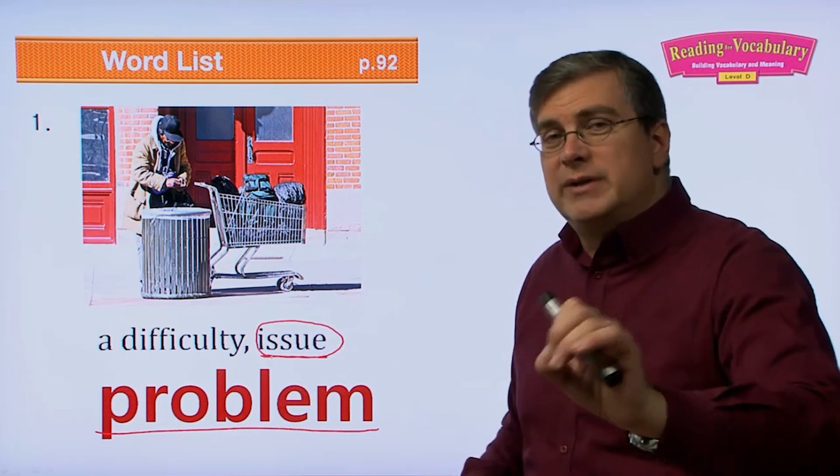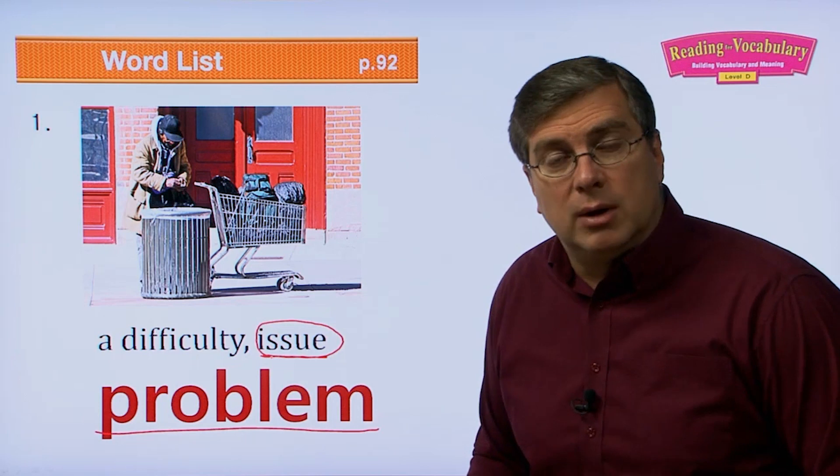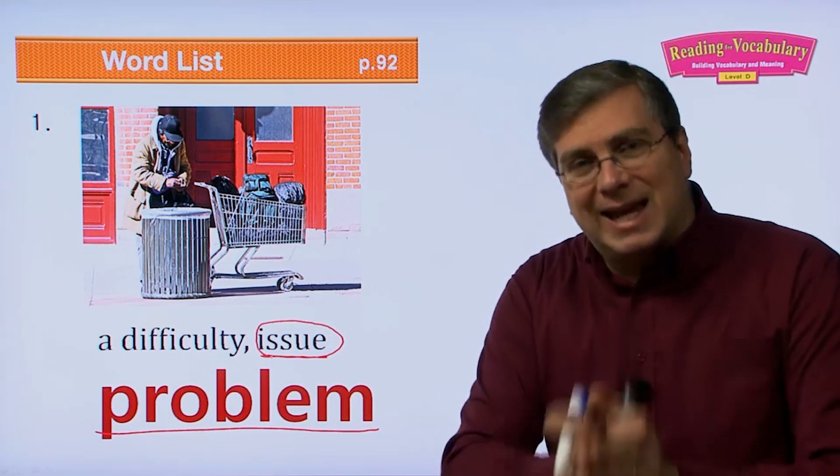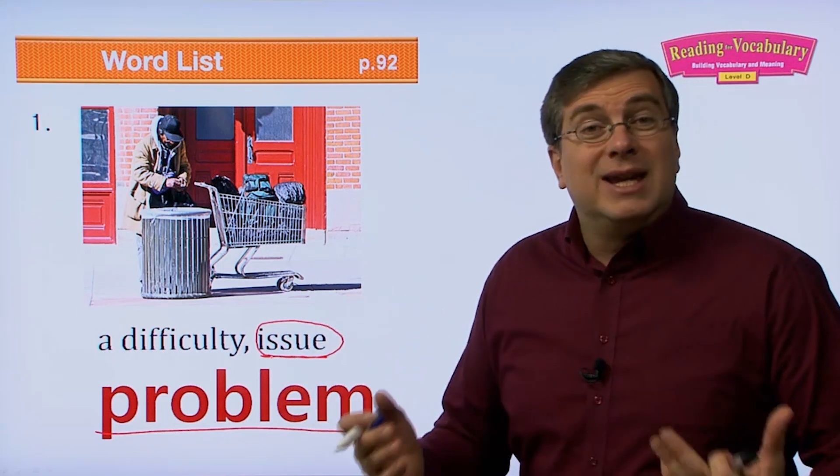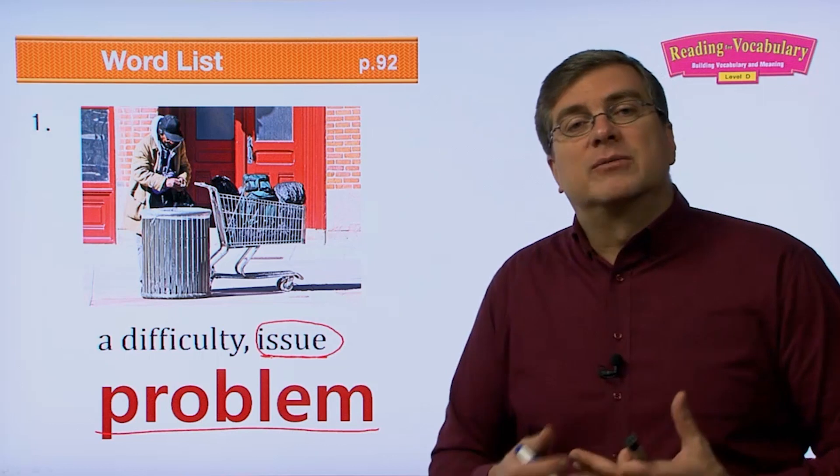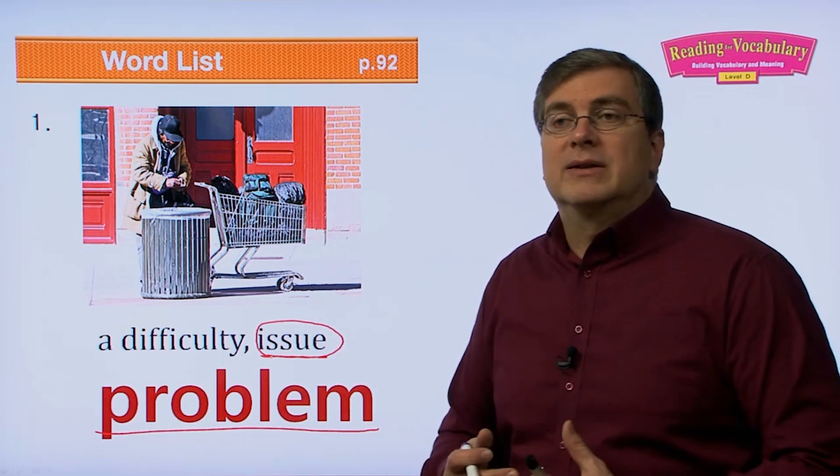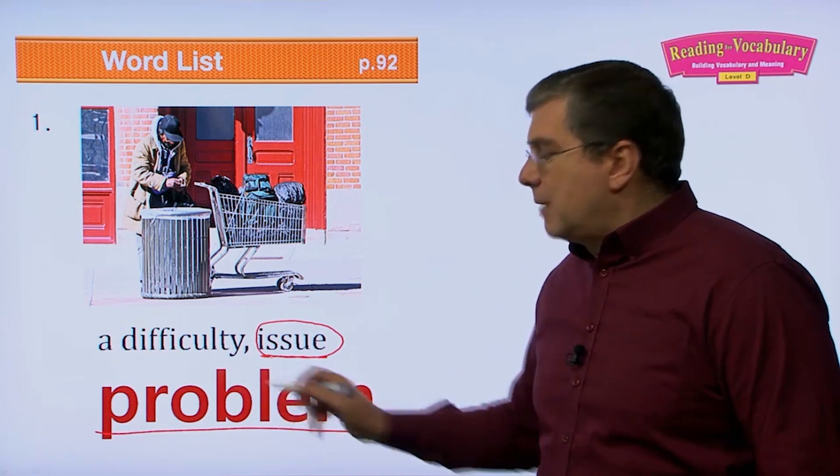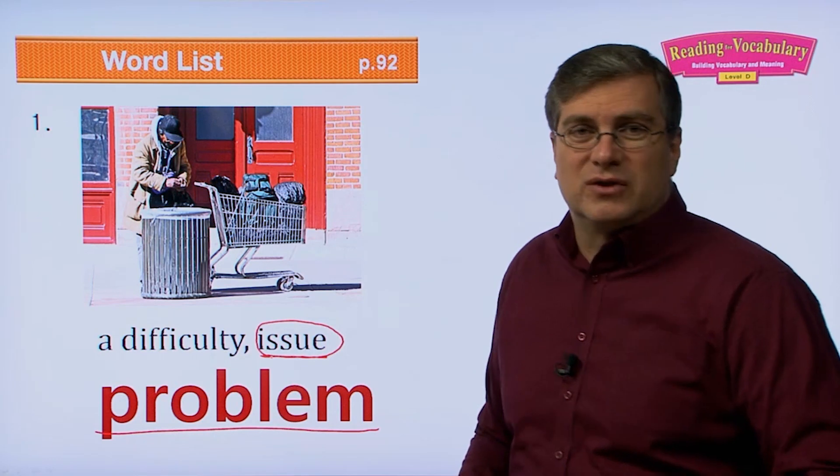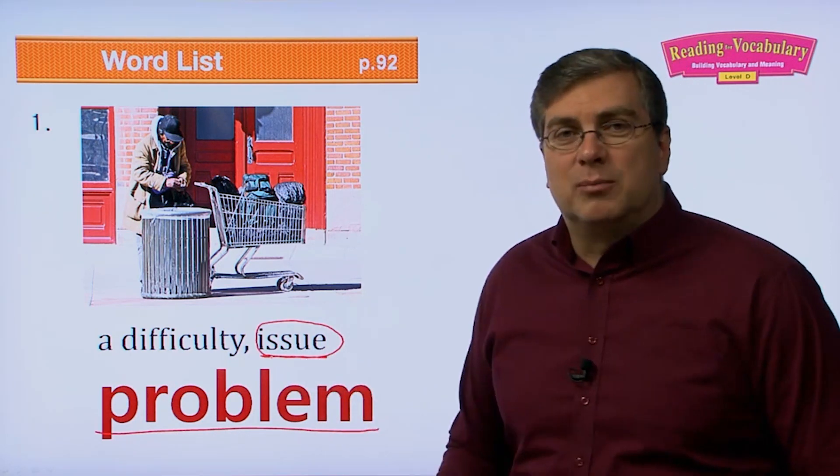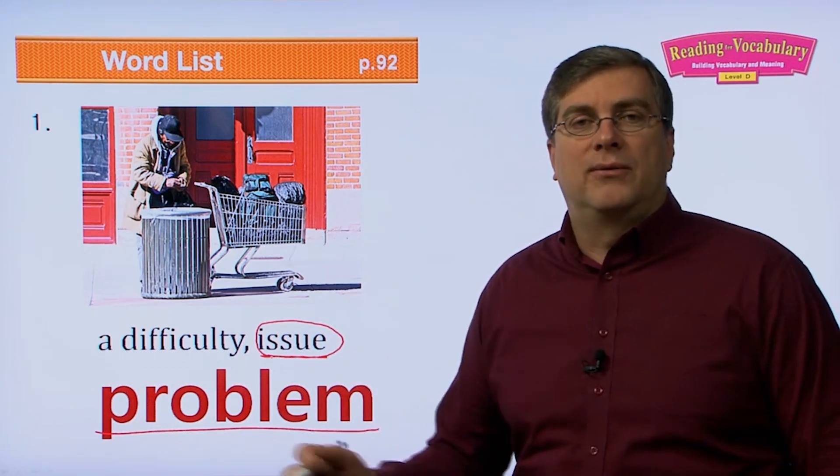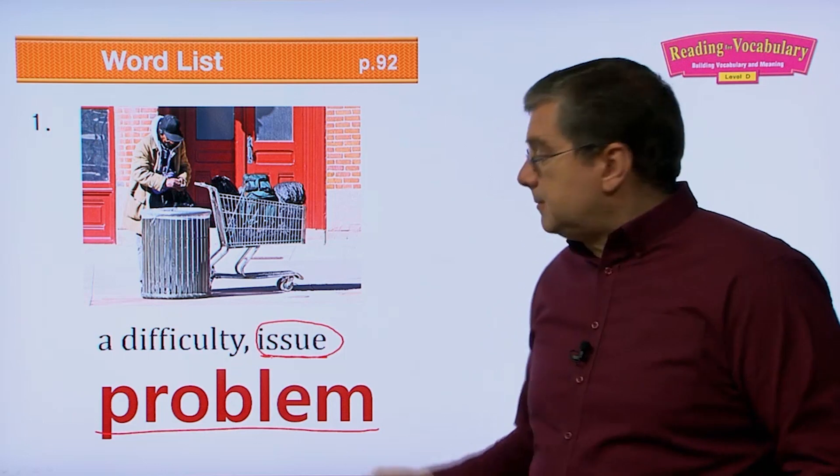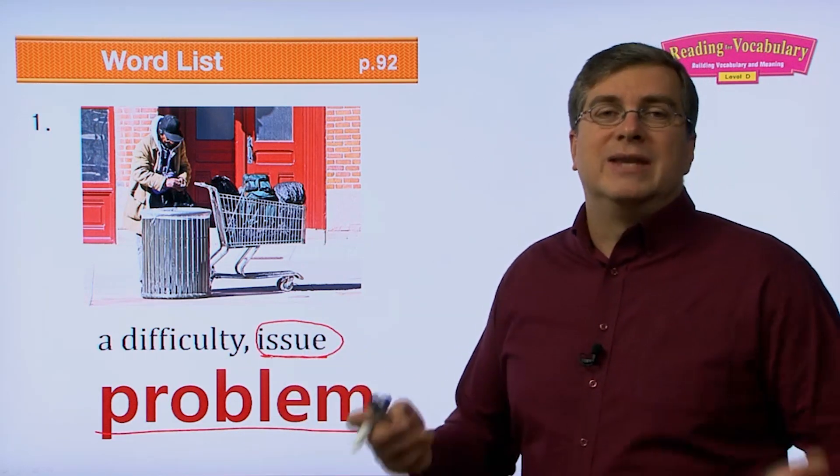Issue sounds more neutral. So Americans, instead of saying do you have a problem, they will say is there an issue with this. Because do you have a problem is very direct and sounds negative. But if you change it and you say is there an issue with this, then that sounds more neutral. It doesn't sound as rude and it doesn't sound as negative. I've noticed over maybe the last 10 or 20 years that Americans have stopped using problem, especially in polite situations, like business situations. People have stopped using problem and they're starting to use the word issue much more often because problem sounds negative.